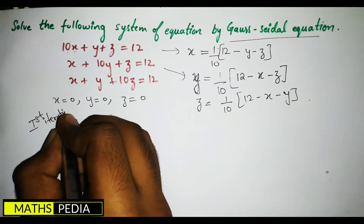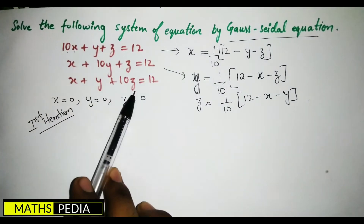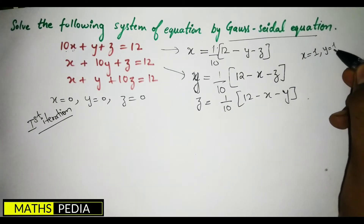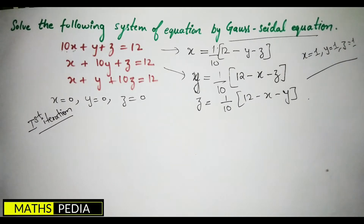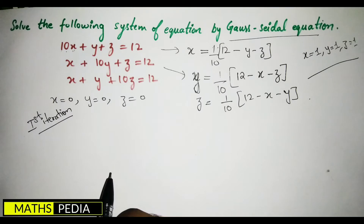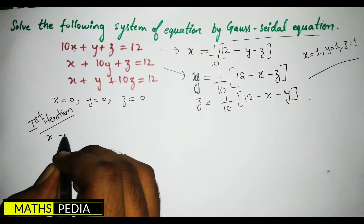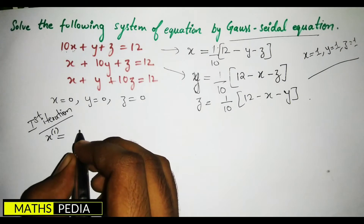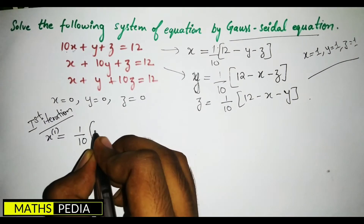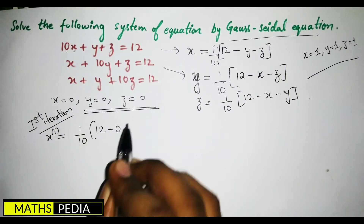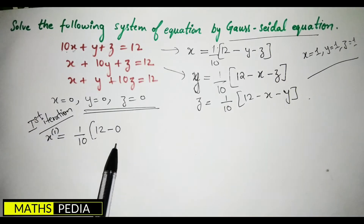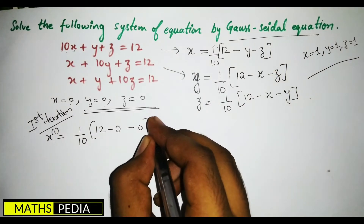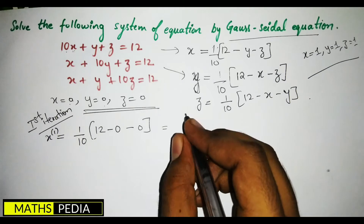In cases like this where the constants are the same and the RHS is also the same, the solution will be x = 1, y = 1, z = 1 — but you have to show how to arrive at it. For the first iteration, starting with the first equation: x₁ = (1/10)(12 − y − z). Substituting y = 0 and z = 0, we get x₁ = 12/10 = 1.2.